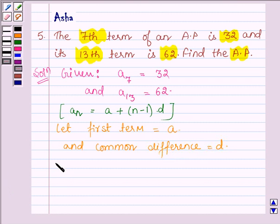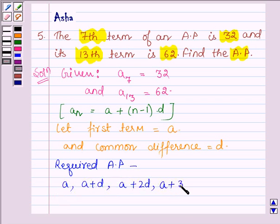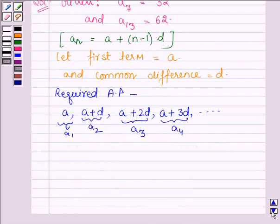The required AP will be of the form: the first term will be A, second will be A plus D, third will be A plus 2D, fourth will be A plus 3D and so on. Let this term be A1, second term be A2, third term be A3, fourth term be A4 and so on.